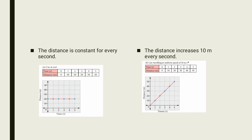First, the distance is constant for every second. In the first second it travels 20 meters, the second second another 20 meters, the third the same 20 meters, the fourth also 20 meters, and the fifth second the same 20 meters. So the distance is constant and never changes — it maintains 20 meters each time.